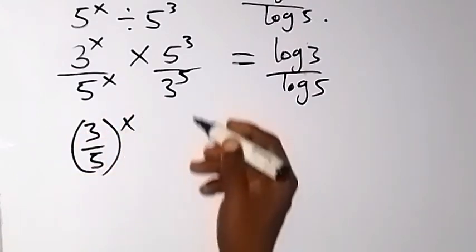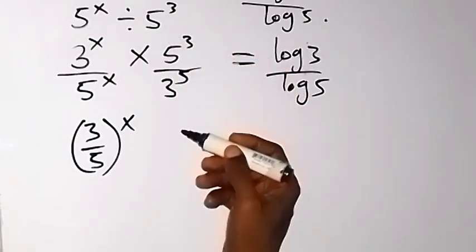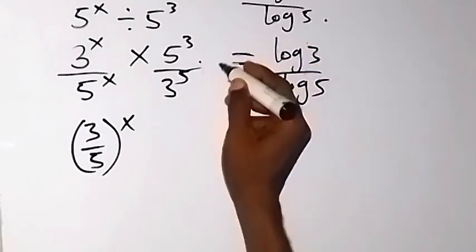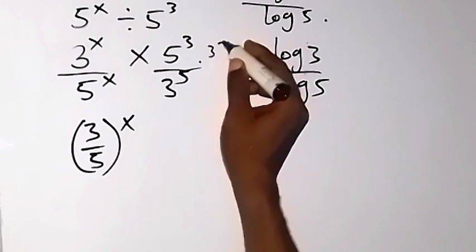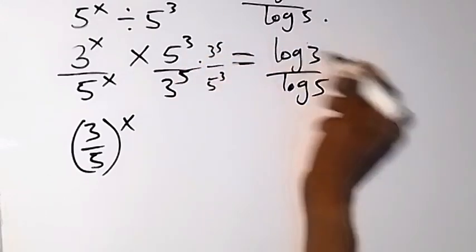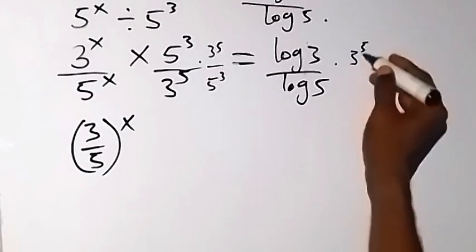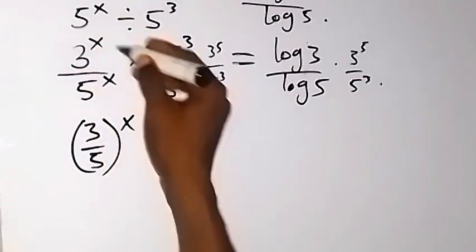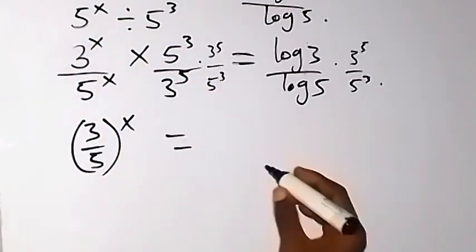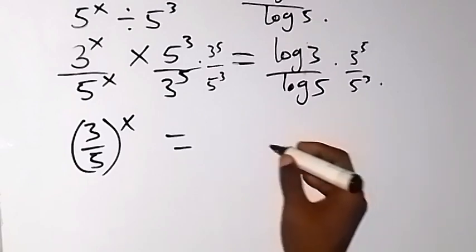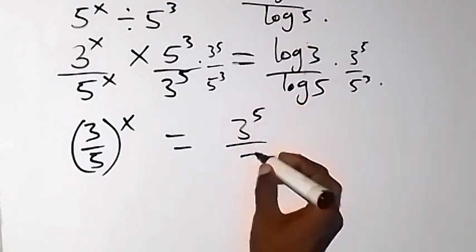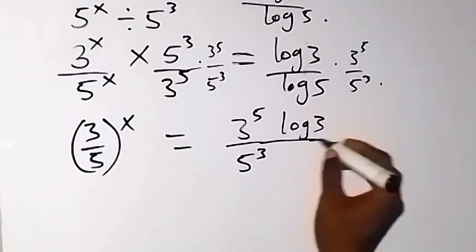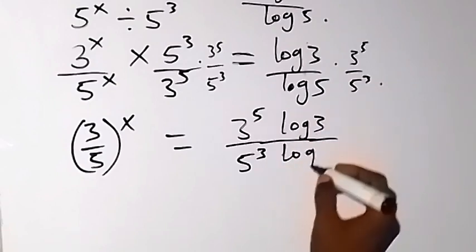Now, let's remove the fraction by multiplying both sides by the reciprocal. The reciprocal here is 3 raised to the power 5 over 5 raised to the power 3, so it will cancel on one side. When I multiply it on the other side, I have 3 raised to the power 5 over 5 raised to the power 3. So I'm left with 3 over 5 raised to the power x, equals 3 raised to the power 5 over 5 raised to the power 3, multiplied by log 3 over log 5.